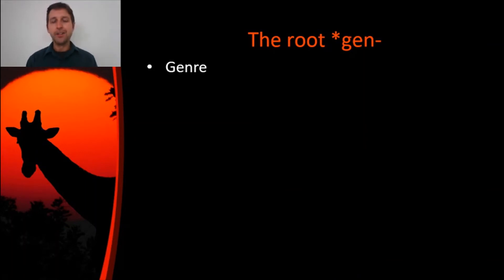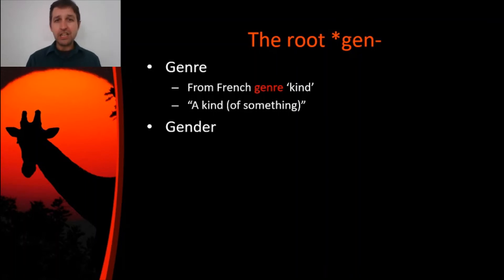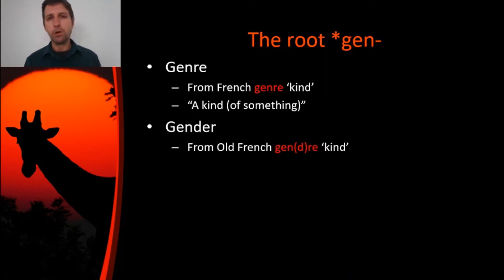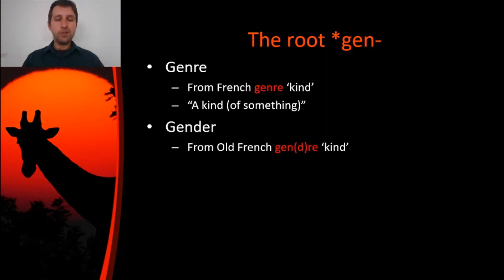What about genre? Genre also comes from the root Gen. As you can probably guess from the way we pronounce it, it comes from French genre, which just means a kind of something or a type of something. This comes from Latin — notice that E is gone between the N and the R, but that's something French does a lot. Interestingly, gender also comes from the same word as genre. Genre means a kind of something; gender also means a kind of something. The D in gender comes from Old French, where sometimes a D would show up between N and R to make it easier to say them together. So gender and genre are actually etymologically the same word.